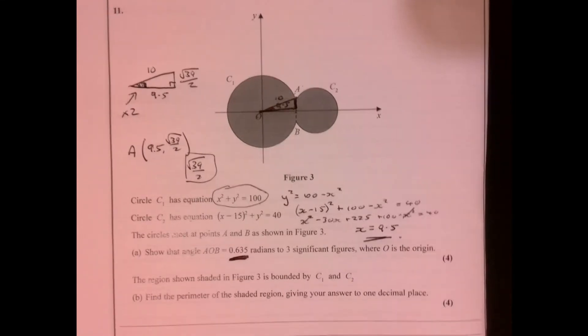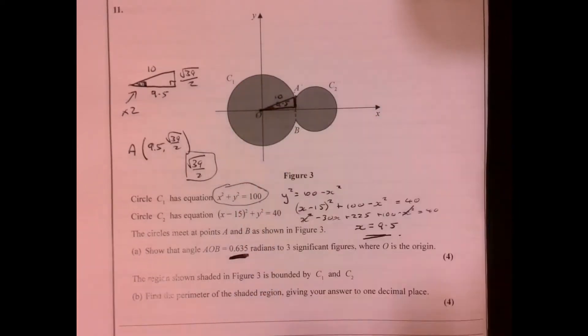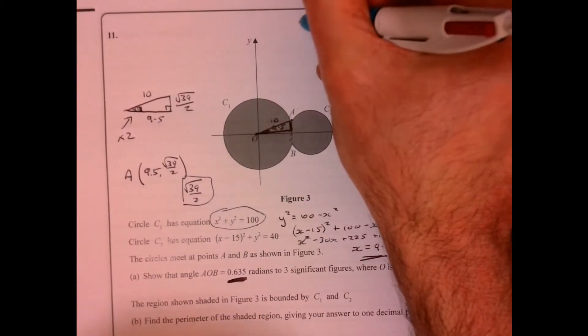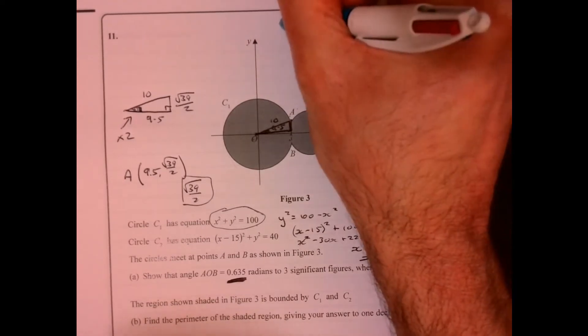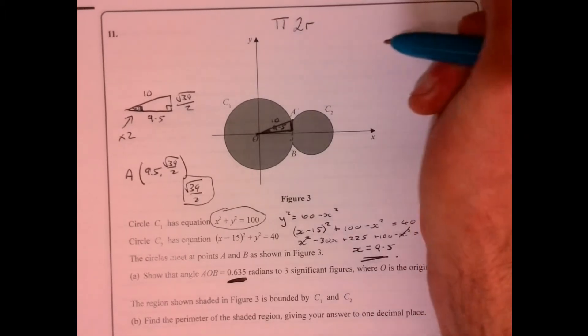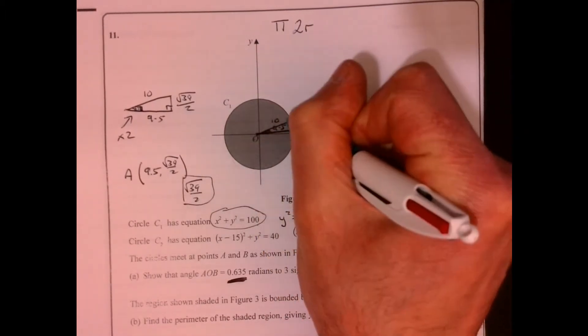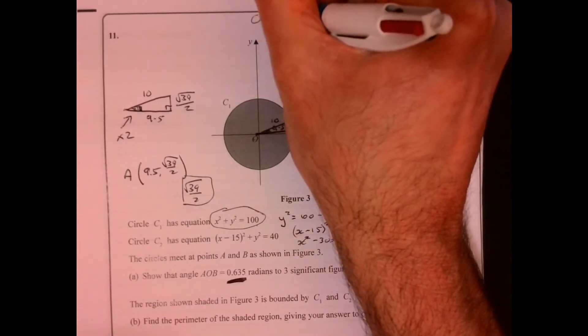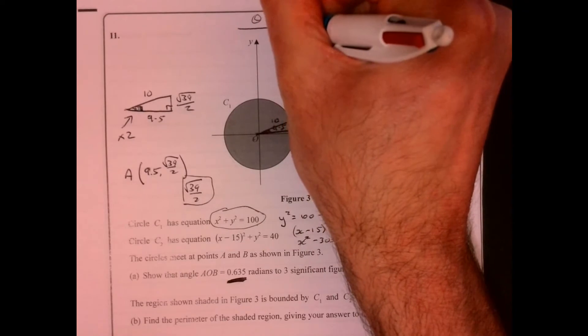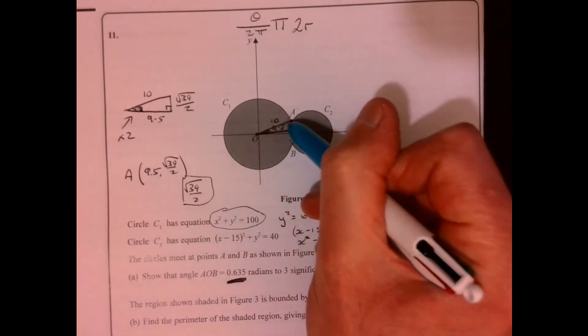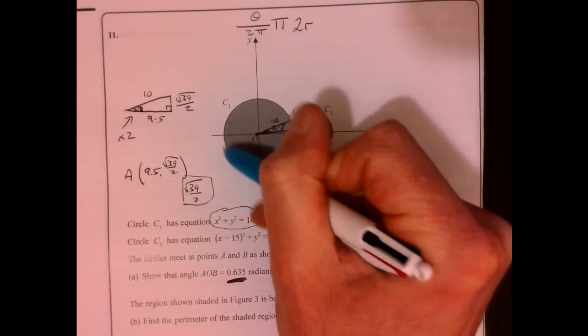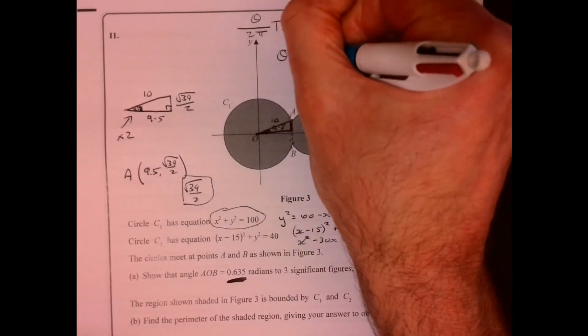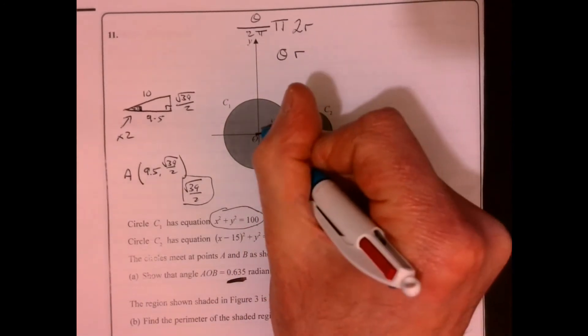Now the next part of the question says find the perimeter of the whole thing. So let's think about how we work out the perimeter or the circumference of a circle. All right, so to work out the circumference of a circle it's pi times d, isn't it, or pi times 2r. Now if you only want a sector—remember we're only after this bit around here—then that would be theta over 2 pi. So what you should remember is to work out the circumference of a sector or the arc length, it's just theta times r.